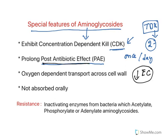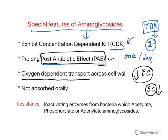For any drug to show activity, a certain effective concentration must be present in the plasma. Even after falling from that effective concentration, aminoglycosides will continue to show antibiotic effect — this is known as the post-antibiotic effect. Additionally, aminoglycosides are transported into the bacterial cell by an oxygen-dependent mechanism, meaning in the case of anaerobic bacteria, aminoglycosides can never get inside the cell and cannot be used to treat anaerobic infections.